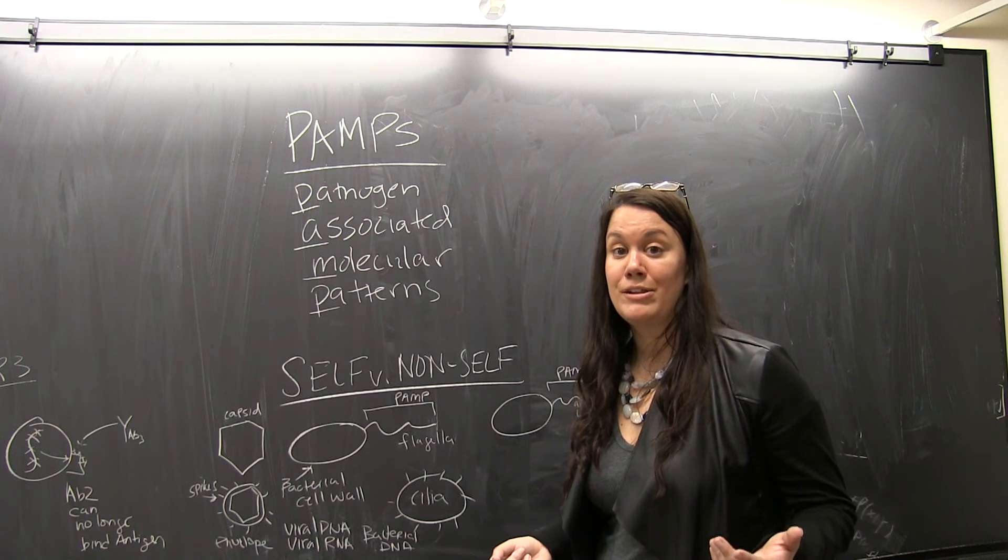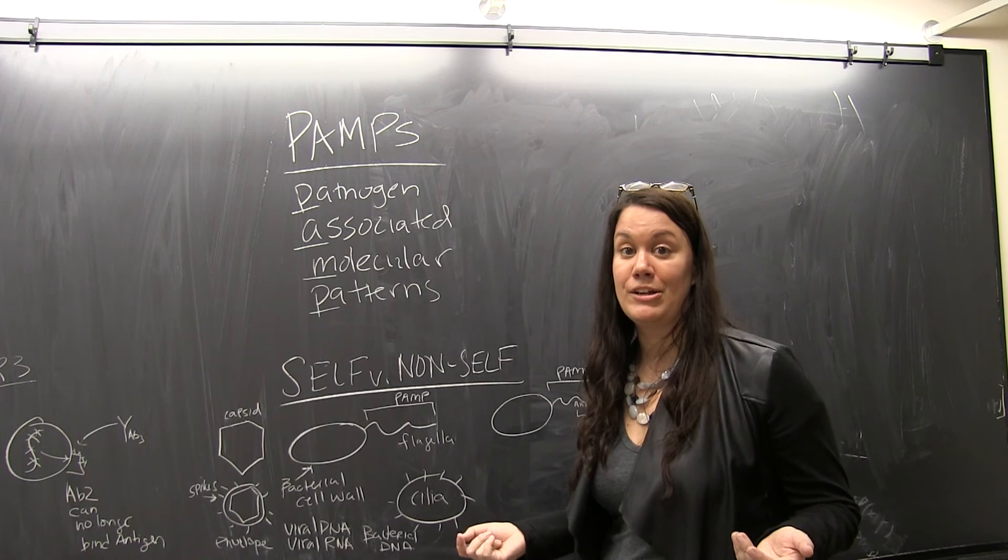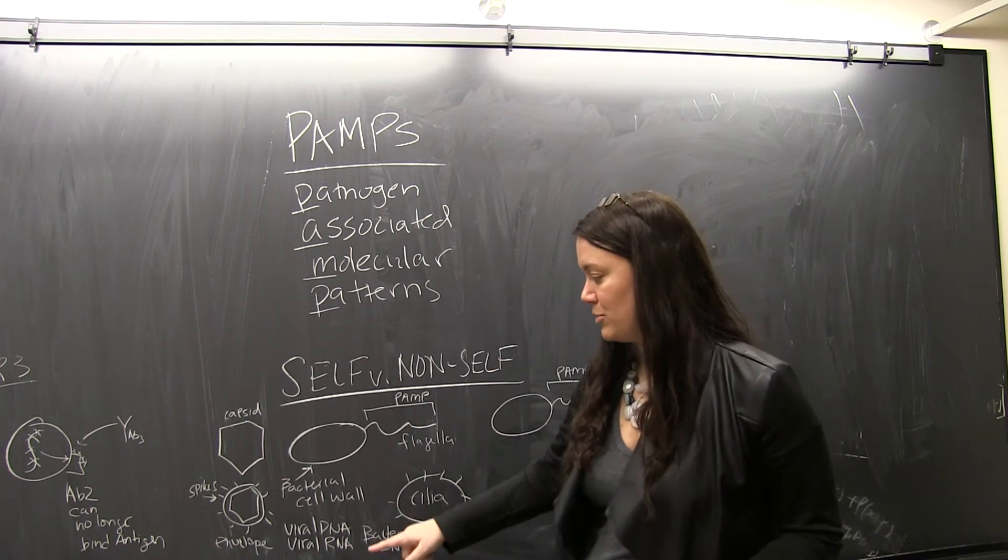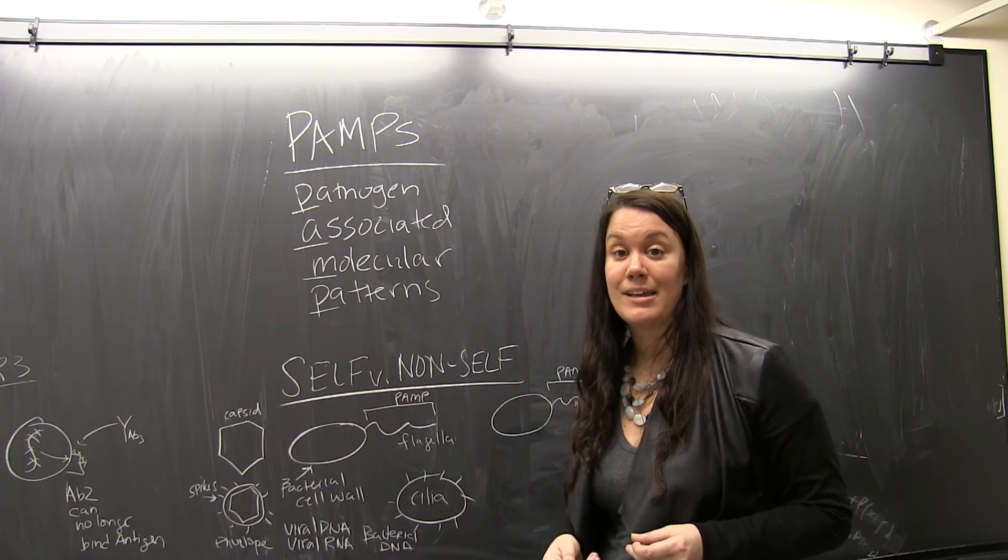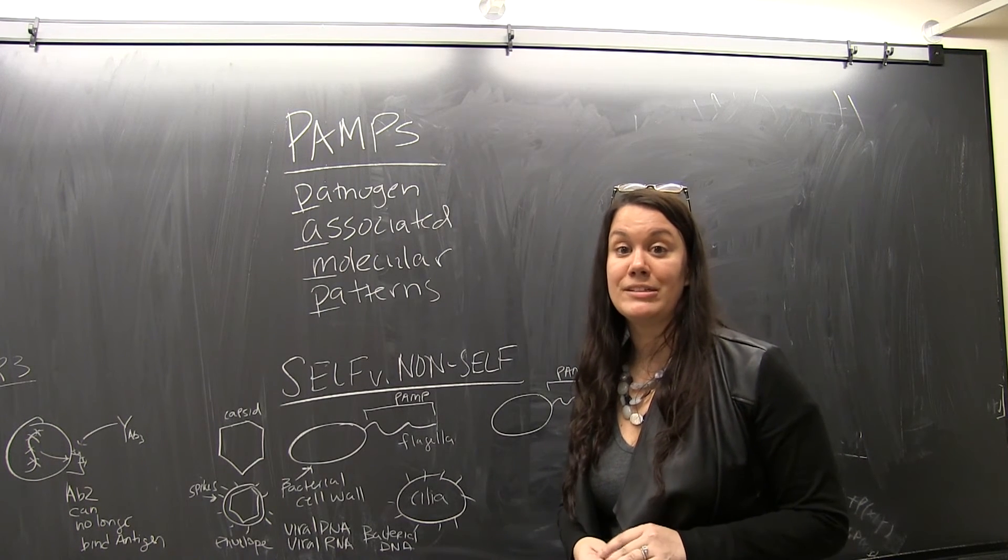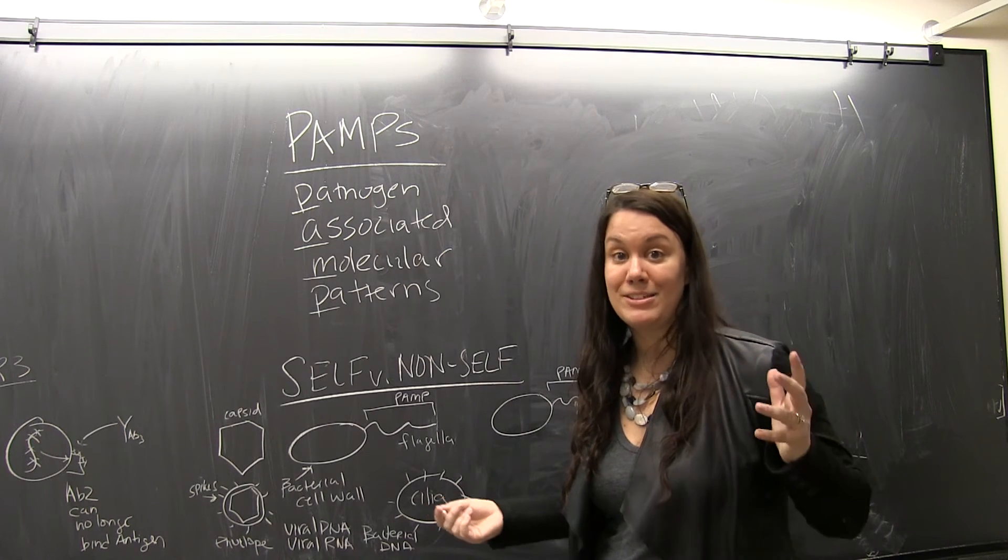We can also consider viral and bacterial genetic material a PAMP. For example, we could have viral RNA, we can also have viral DNA, and then we also have bacterial DNA and bacterial plasmid DNA.